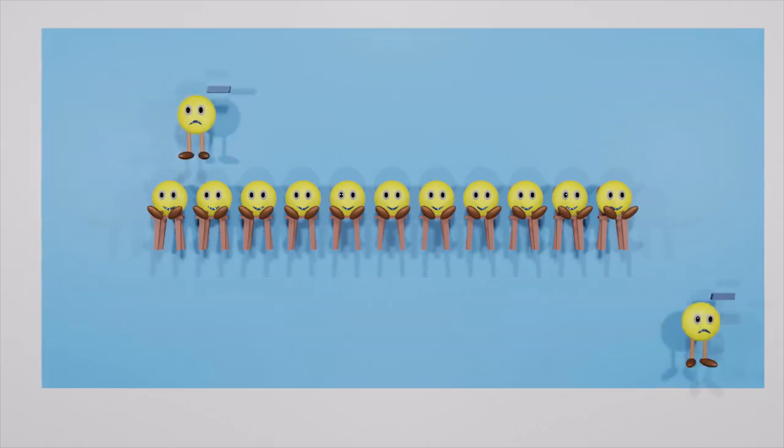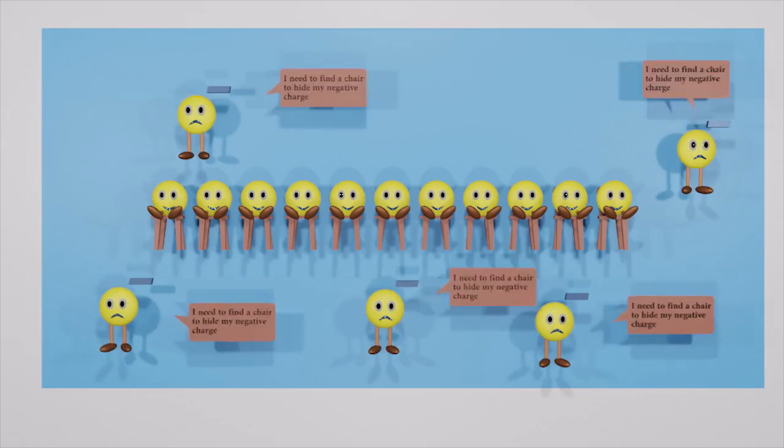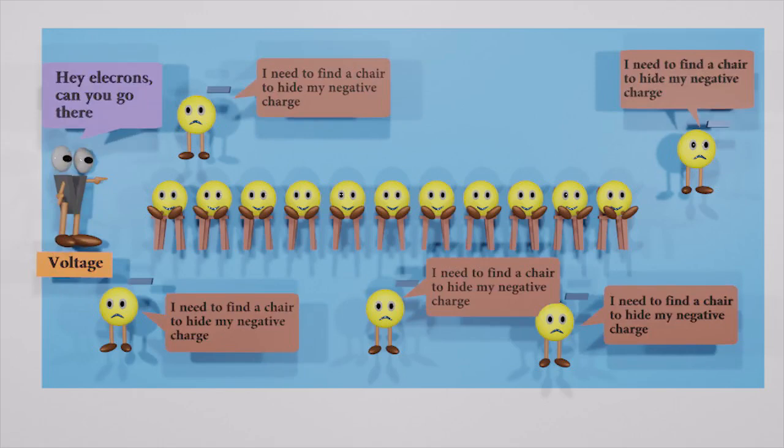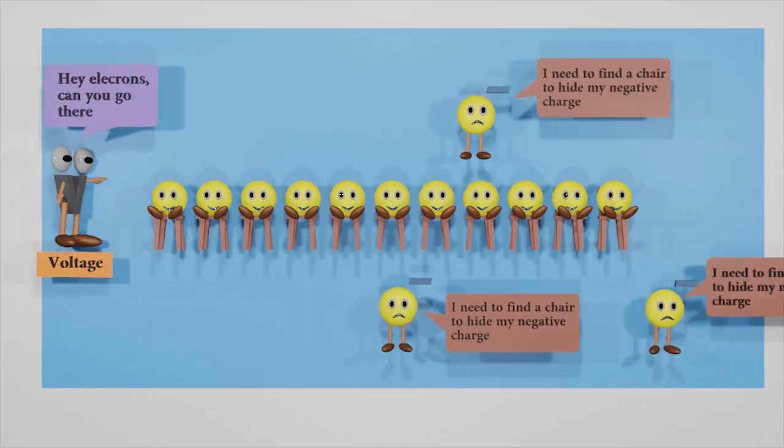If we introduce a few new electrons here, they have no chairs to sit on. They are not comfortable like that. Free electrons are always searching for chairs to sit. If we guide them using a voltage, they will obey us and move.